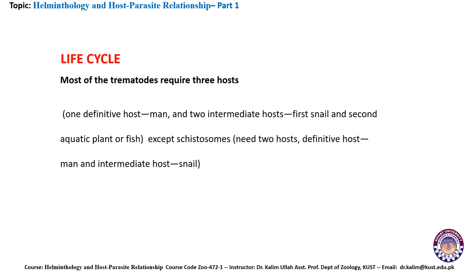In the case of trematodes, they most of the time require three hosts: one definitive host, which is most of the time man, and two intermediate hosts — the first one is the snail and the second is aquatic plants or fish. But there is an exception: in the case of Schistosoma, which needs only two hosts — the definitive host is man and the intermediate host is the snail.